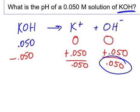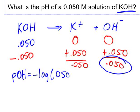So there are a few avenues I can take from here. What I would probably do is calculate the POH of this solution, which we get by taking the negative log of our OH concentration, 0.050.